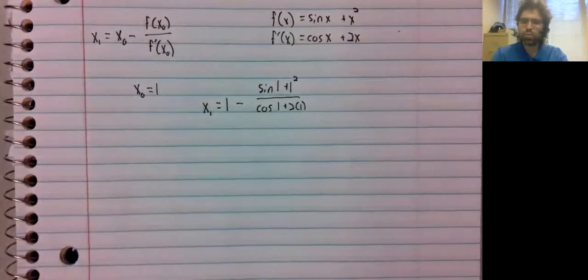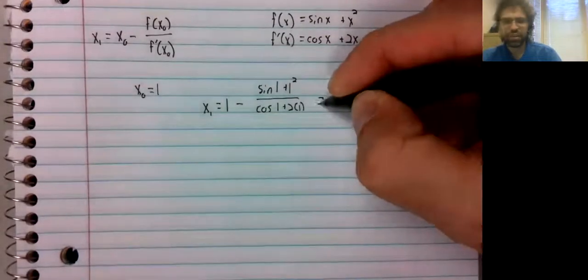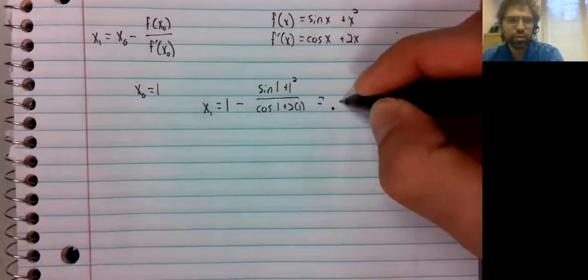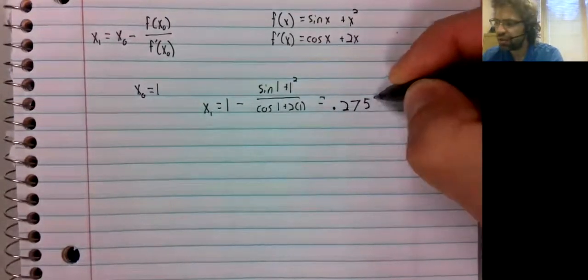Make sure that your calculator is in radian mode here. Type that in, I got 0.2751.